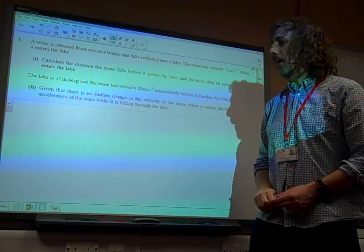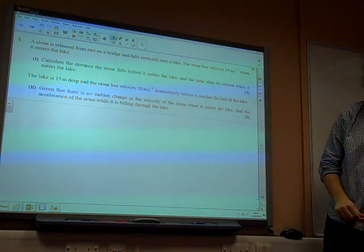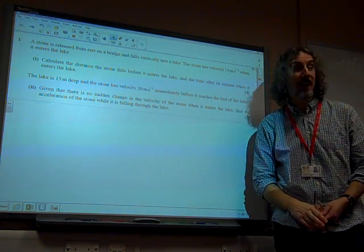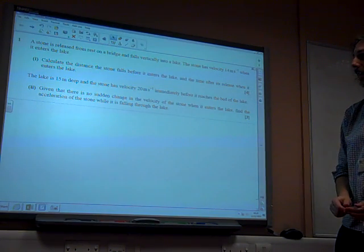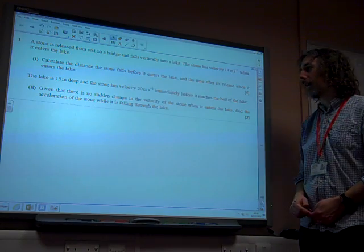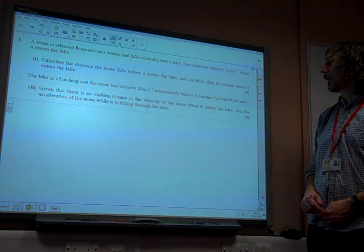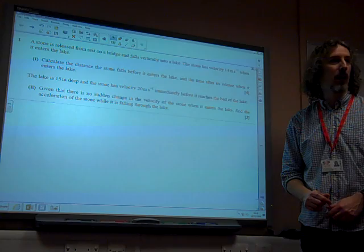A stone is released from rest on a bridge and falls vertically into a lake. Bridge over a lake, exciting. The stone has velocity 14 metres per second when it enters the lake. Calculate the distance the stone falls before it enters the lake and the time after its release when it enters the lake.